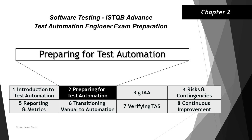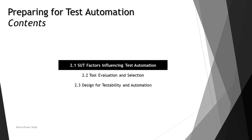Hello friends and greetings for the day. Welcome back to another tutorial on ISTQB Test Automation Engineer. We are in chapter 2 and looking at the next topic, which is the first topic of this chapter: 2.1 ACUT Factors Influencing the Test Automation. Let's understand more about the same.